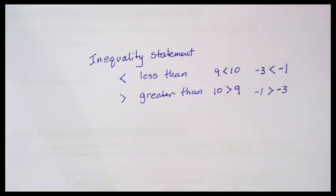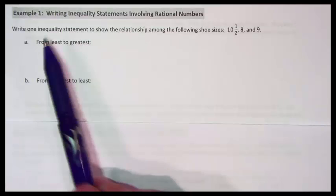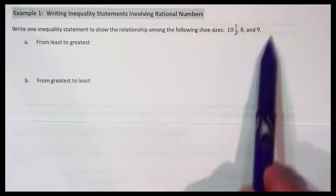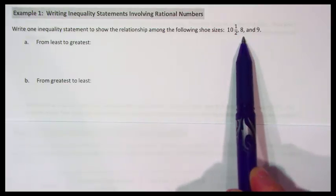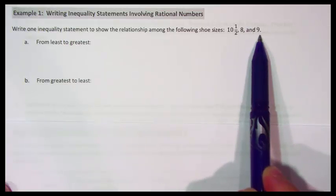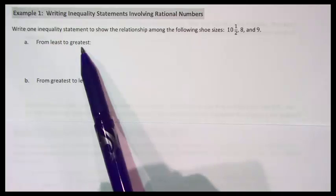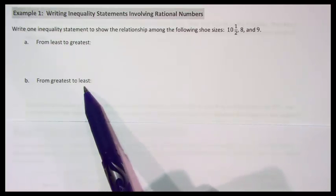Let's take a look at our first example. We're going to write one inequality statement to show the relationship among these three shoe sizes: 10½, 8, and 9. We're going to do it two different ways — first from least to greatest, and then from greatest to least.